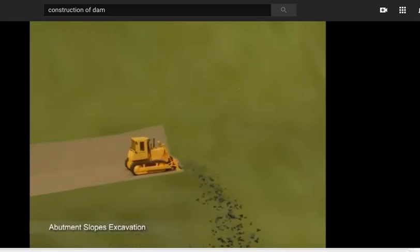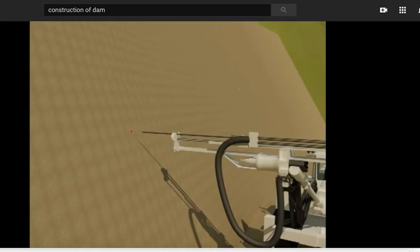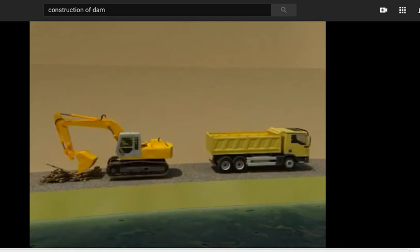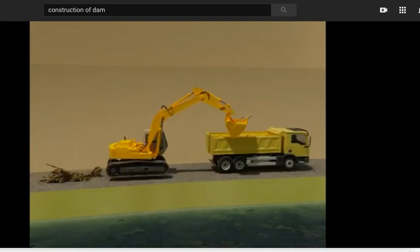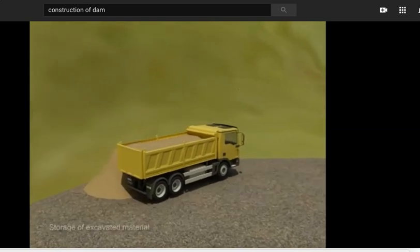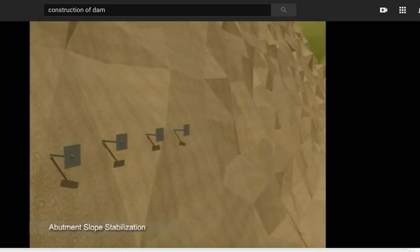Simultaneous to river diversion, excavation for dam abutment in both soil and rock is taken up. Excavation is carried out with a small excavator and one-boom hydraulic drill. The abutment slopes are excavated in stages until the river water level is reached. The excavated slopes are stabilized by installing rock anchors and spraying shotcrete.